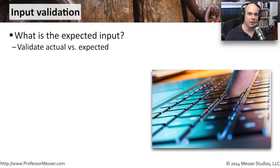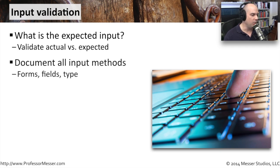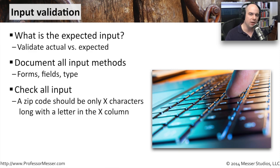A very common development process is one where we validate the input that is going into our systems. We determine what the expected input might be and we compare it with what we get. If we're asking someone for a name, an address, maybe a serial number, there's probably an exact string or a set of strings we might expect. We want to go through our entire application, document every possible input method, look at forms, look at fields, and check all of our input.